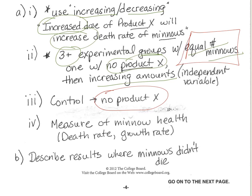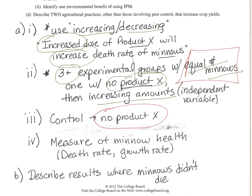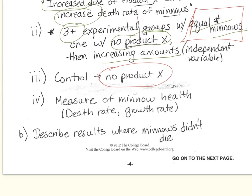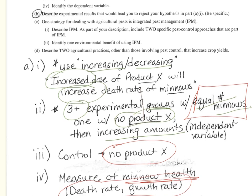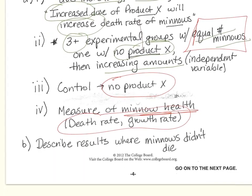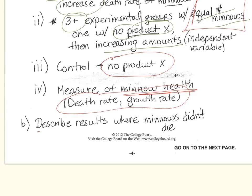For number four, it asks you to identify the dependent variable, which is the death rate, growth rate, or some sort of indicator of minnow health. For Part B, it asks: at what point would we say our hypothesis was incorrect? Their wording is: 'Describe the experimental results that will lead you to reject your hypothesis in part AI — be very specific.' You had to be specific, describing the pond with product X that did not have minnow death, which would lead you to reject your hypothesis.